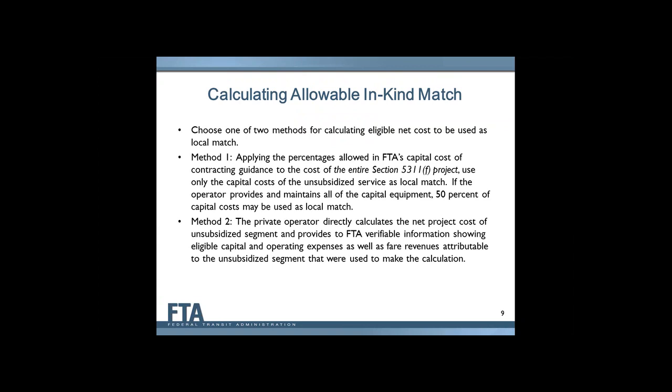There are two methods available for calculating the eligible net cost that can be used as local match. The first is to use only the capital cost of the unsubsidized service, using the FTA capital cost of contracting guidance to determine the percentage that can be used. Under the second method, the private operator directly calculates the net project cost and provides information to FTA showing exactly how the calculation was made, including what expenses were used and how fare revenues were calculated.